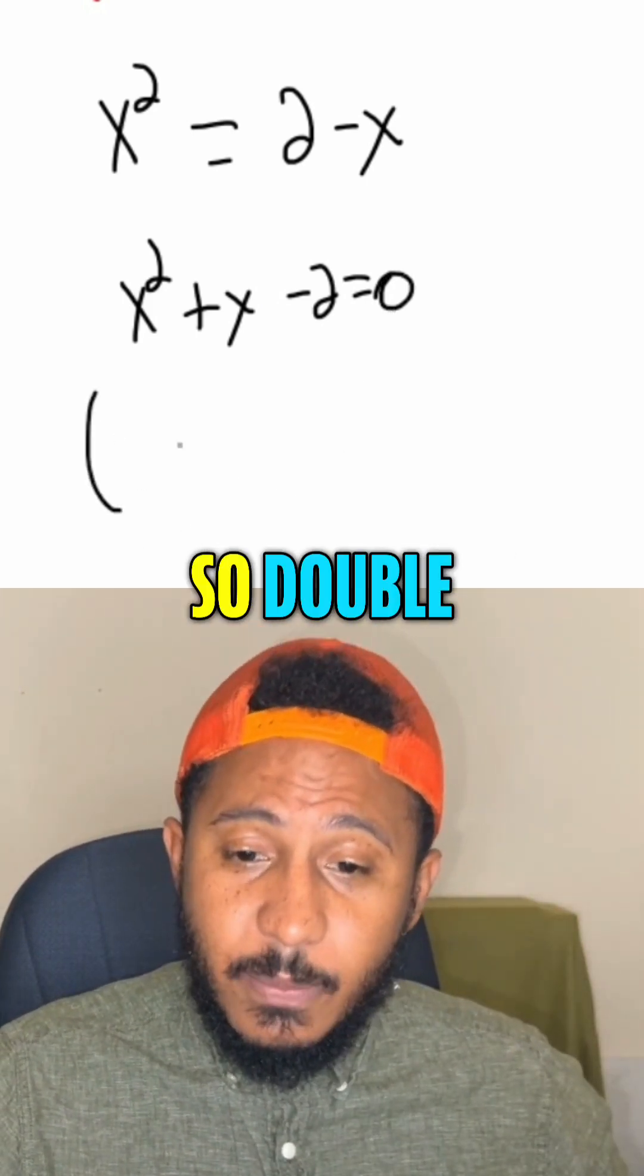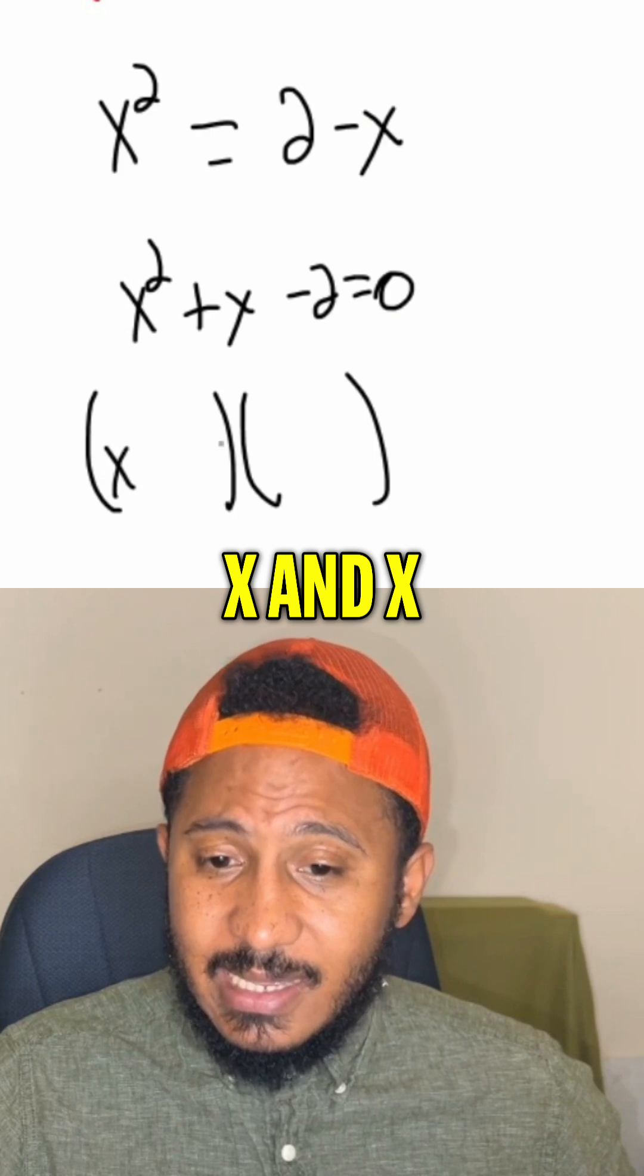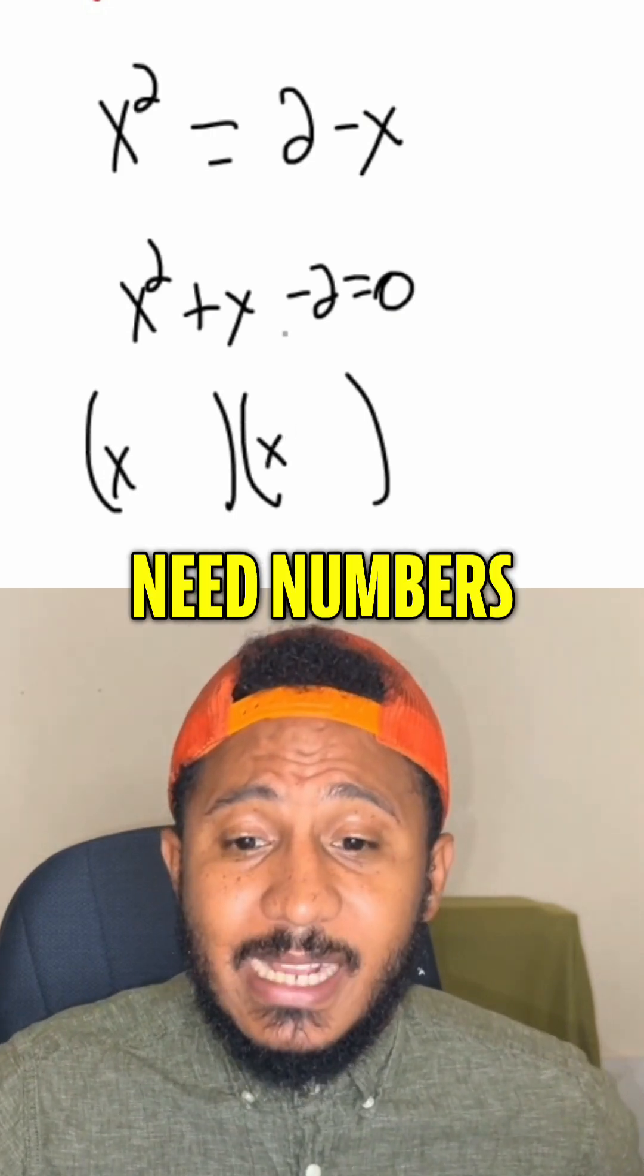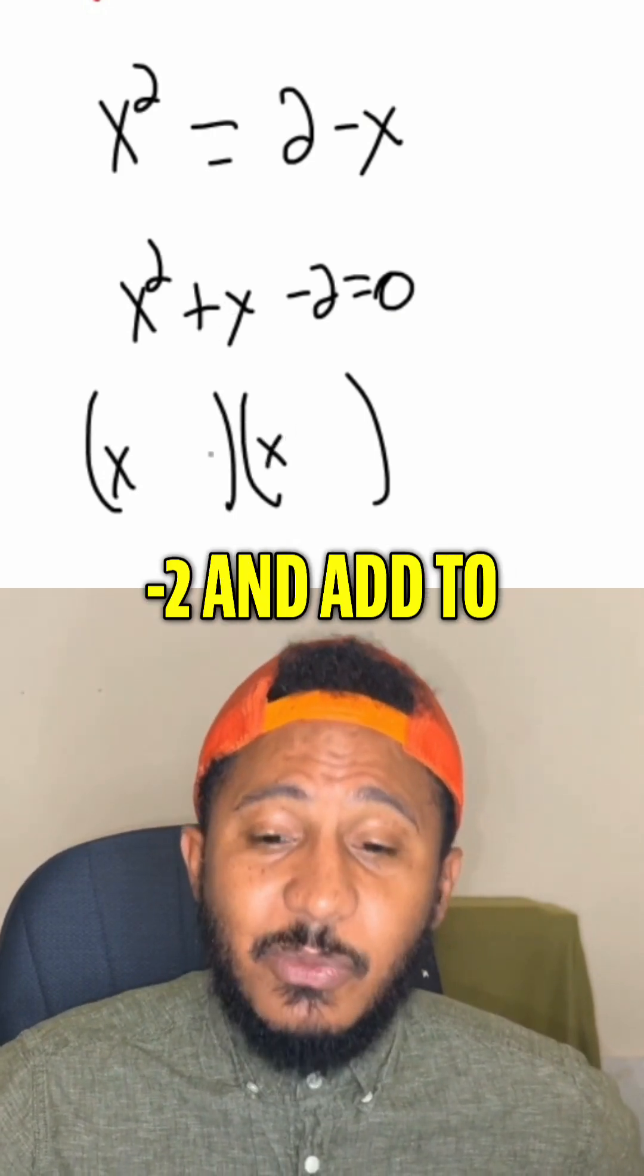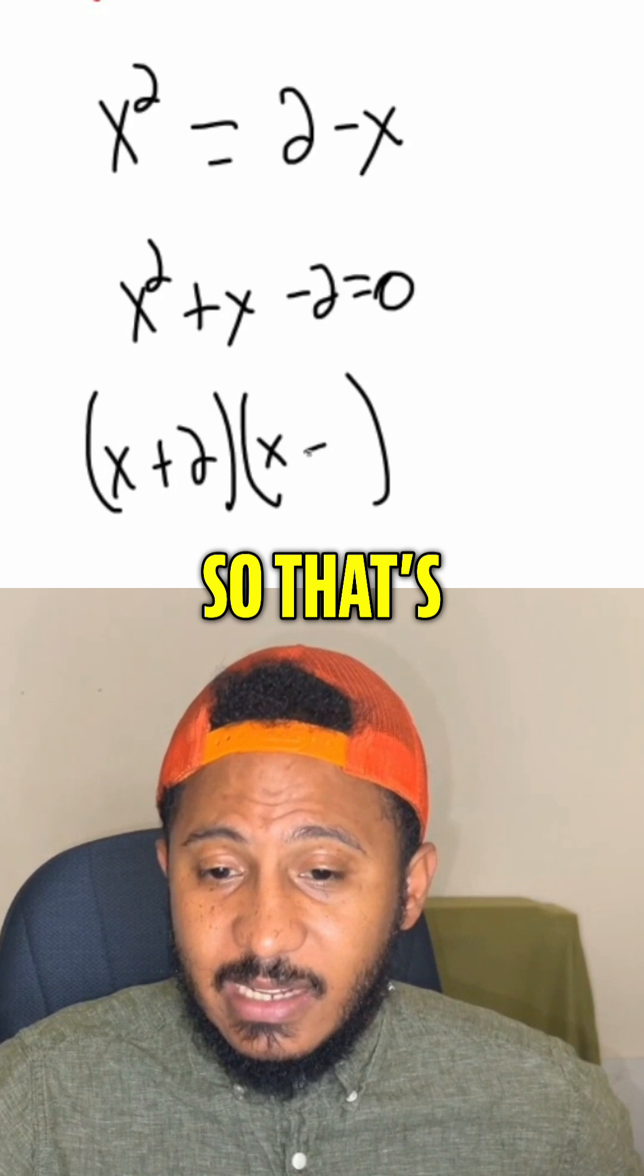It's three terms. There's a 1 in front, so double bubble, x and x. And then the numbers that multiply give me negative 2 and add to give me this positive 1. So that would be positive 2 and negative 1.